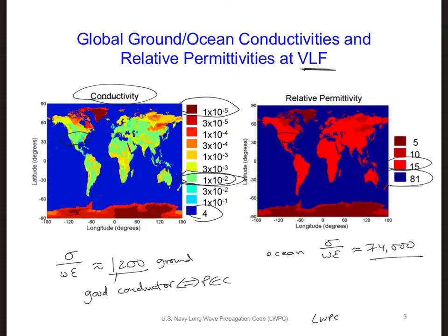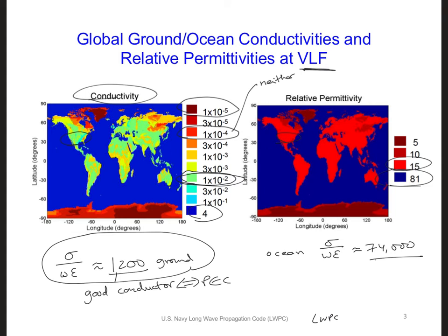What about if we go the other direction on this scale of conductivities? Parts of Asia and Canada have conductivities on the order of 1×10⁻⁴, which gives us a loss tangent of 36, which is neither a good conductor nor a low-loss dielectric. This means we can't use the good conductor approximation everywhere around the world. For this range, we have neither a good conductor nor a low-loss dielectric. To start simple, let's begin with a good conductor approximation, which we can apply to the ground over much of the United States and around the world, and also to the ocean.